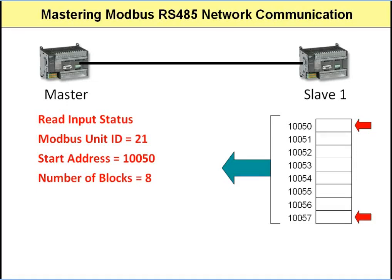This method of data transfer is very wasteful because the master gets data that it's really not interested in. But you have to remember that the Modbus protocol is an old protocol, and at the time, reading data in consecutive blocks was just fine. What's important to remember is that all of the read commands — read coil status, input status, input registers, and holding registers — work in the same way. The master always requests data in consecutive memory blocks, by specifying a start memory address and the number of blocks from the start.